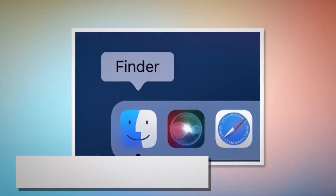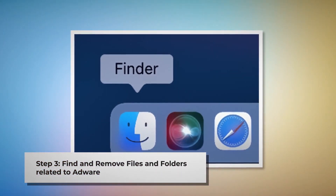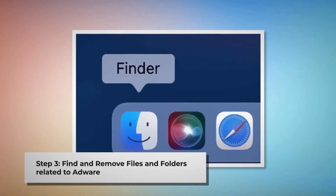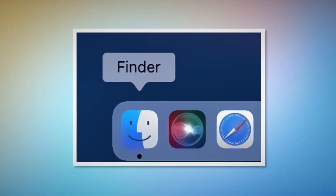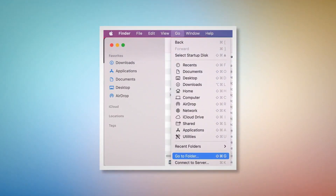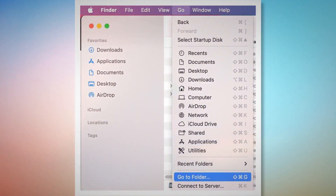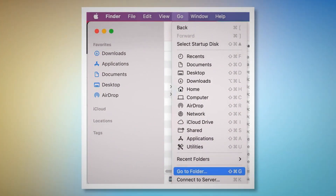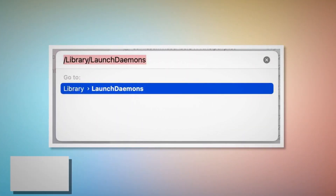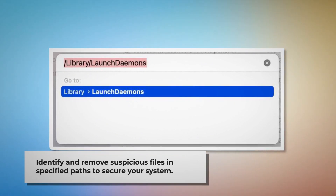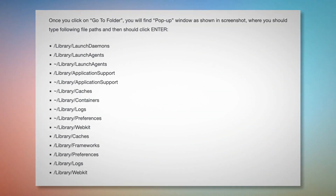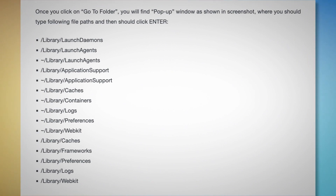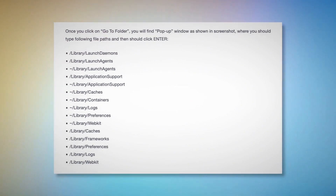Step 3: Find and Remove Files and Folders Related to Adware. First, make sure you are in the Finder folder. Once you are in the Finder folder, click on Go at the top menu bar of your Mac and then Go to Folder on the drop-down menu, as shown in the screenshot. Once you click on Go to Folder, a pop-up window will appear where you should type these file paths and then press Enter. You should type paths such as /Library/LaunchDaemons, /Library/LaunchAgents, /Library/Application Support, and so on. Look for suspicious or malicious files and move them to Trash.